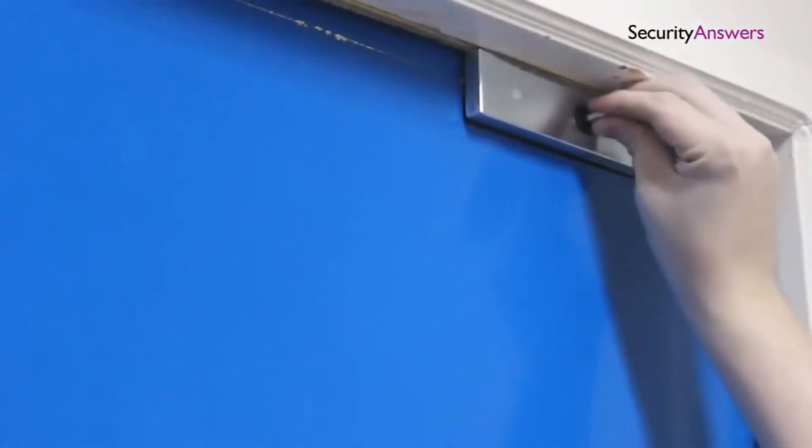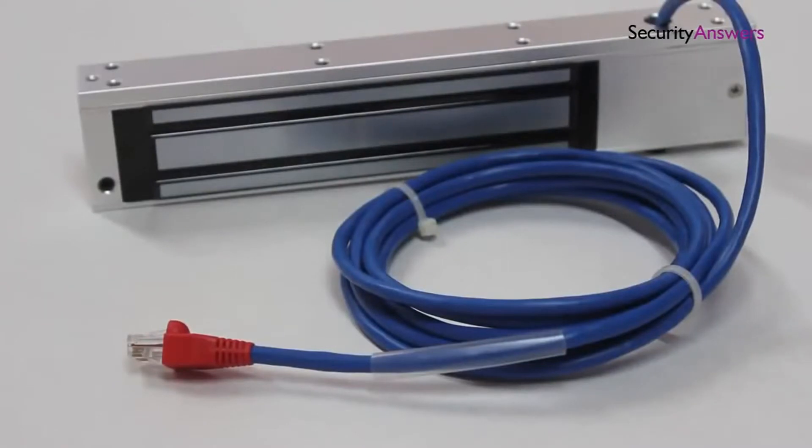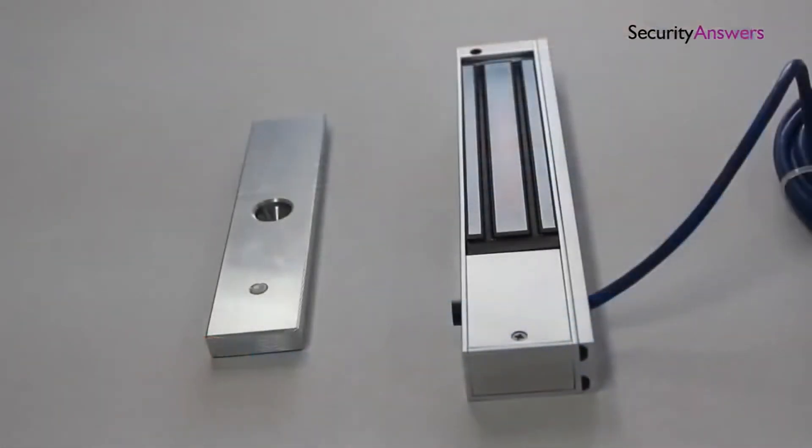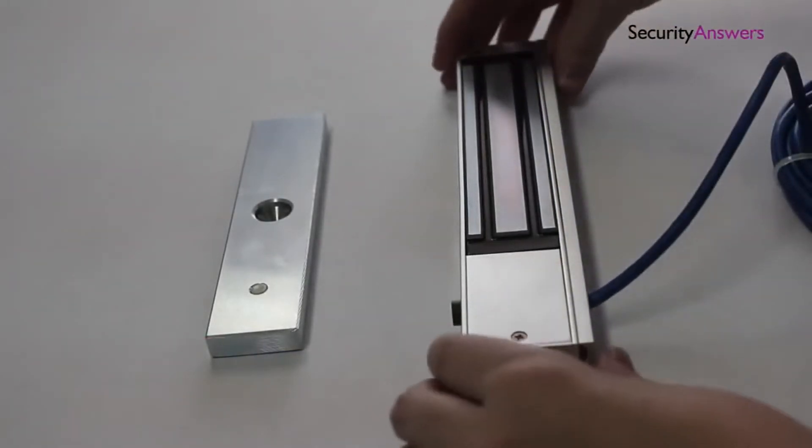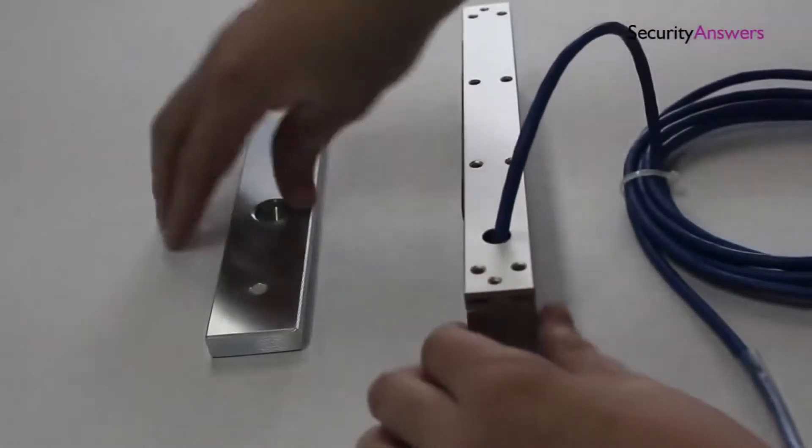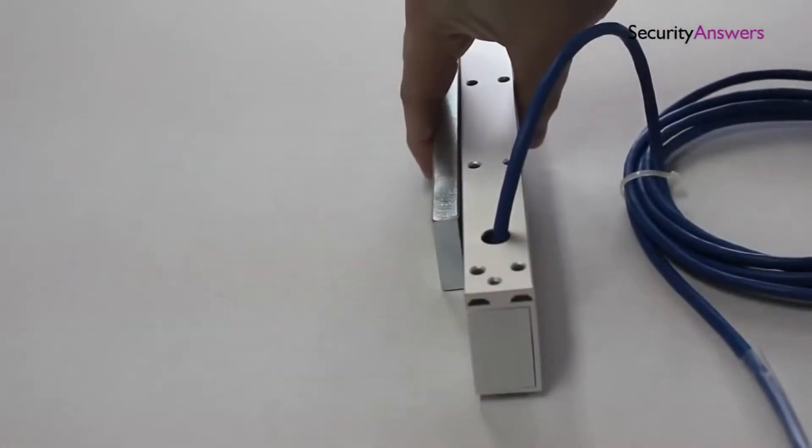Now that we have completed one half of the mechanism, it's time to move on to the EM lock, which should be installed on the doorframe. In order for an EM lock to function, it's extremely important that a thorough connection is made between the two magnets, so take extra care when marking off the area for the second device to guarantee correct alignment.